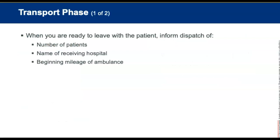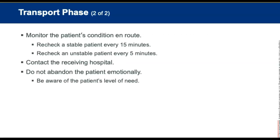The sixth phase is transport. Provide dispatch with the number of patients in the ambulance, the name of the receiving facility, and the beginning mileage in some jurisdictions. Monitor the patient en route — recheck stable patients every 15 minutes and unstable patients every five minutes. Contact the receiving facility and let them know you are coming. Do not abandon the patient emotionally, be aware of the patient's level of need, and use common sense and defensive driving techniques at all times.